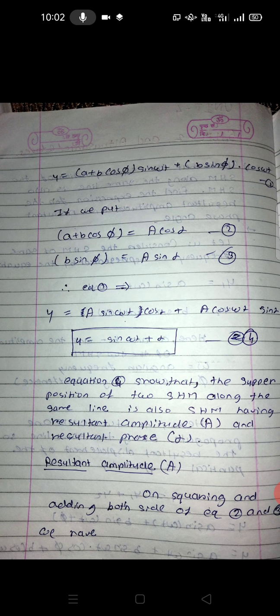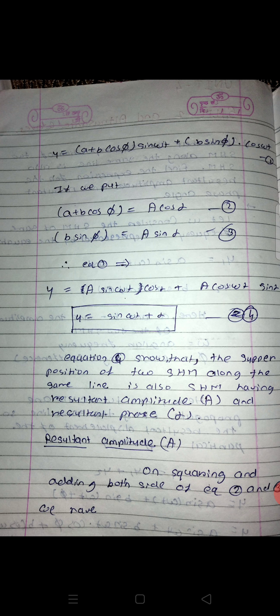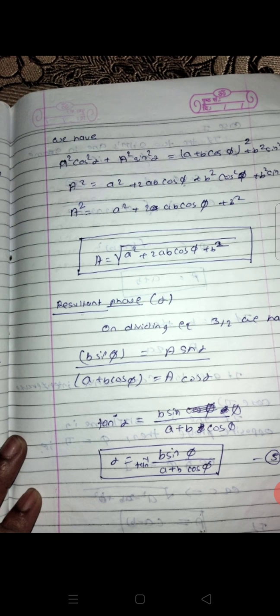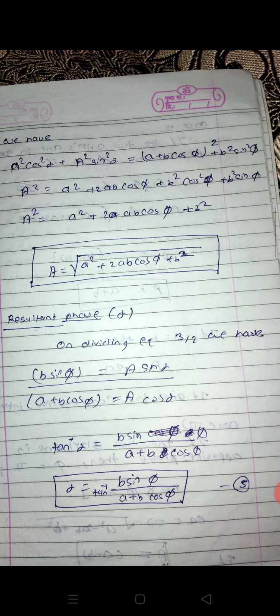Resultant amplitude A: on squaring and adding both sides of equation 2 and equation 3, we get a² cos²α + a² sin²α on the left side, and on the right side (a + b cosφ)² + b² sin²φ. Expanding: A² = a² + 2ab cosφ + b² cos²φ + b² sin²φ. Adding the b² terms together gives A² = a² + 2ab cosφ + b².